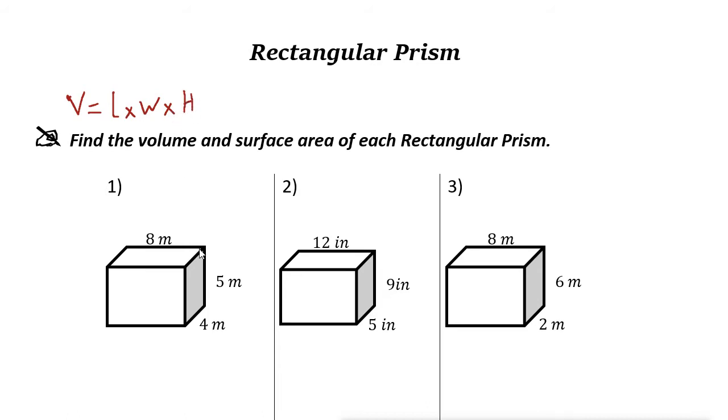So if you multiply this side, the height, and this side, if you multiply these three sides, you get the volume of the rectangular prism.